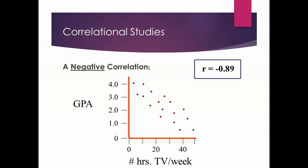We've talked about positive correlations, and you'll recognize one on a scatter plot or as a correlation coefficient. That should lead you to speculate that there are also negative correlations. In a negative correlation, as one variable increases, the other decreases, and as the first variable decreases, the second increases — they're doing opposite things of each other.